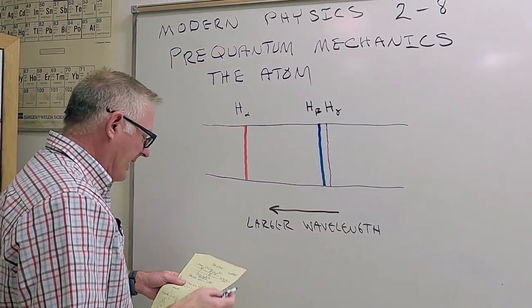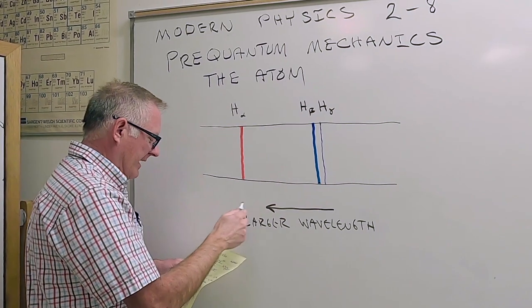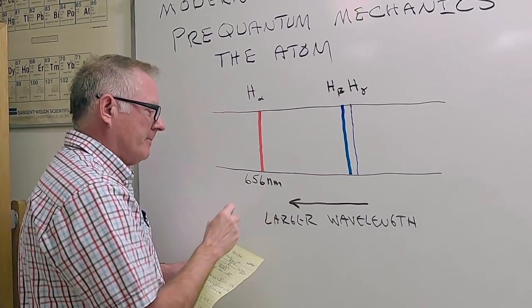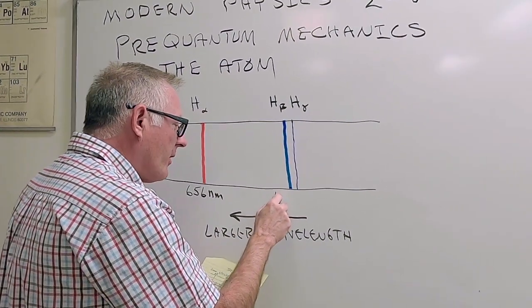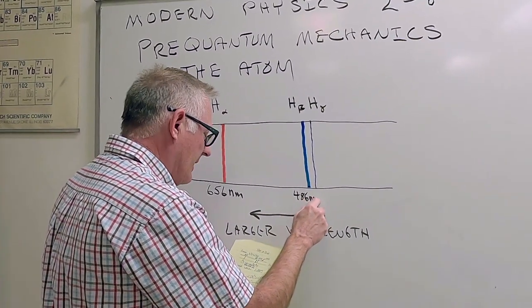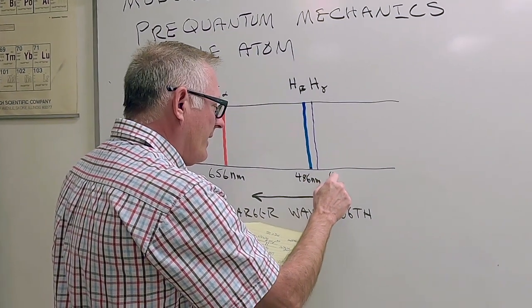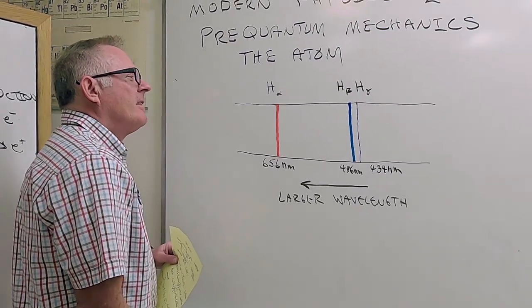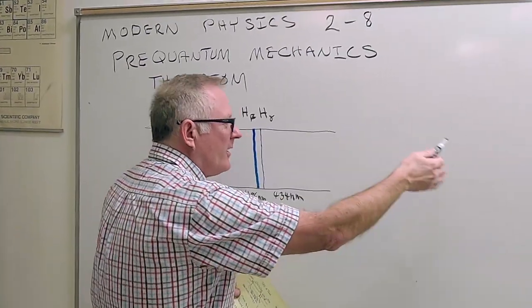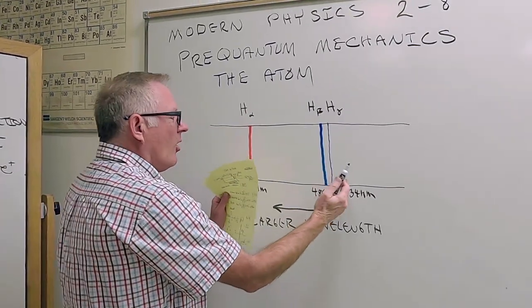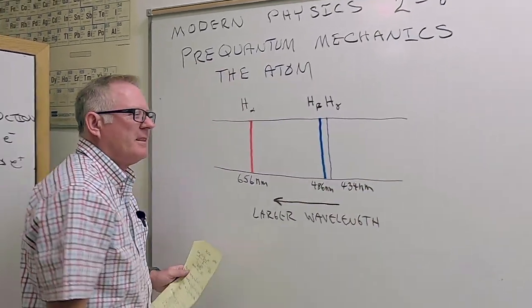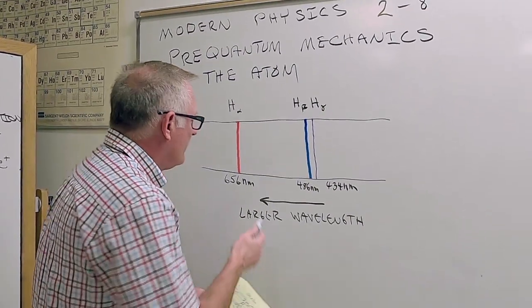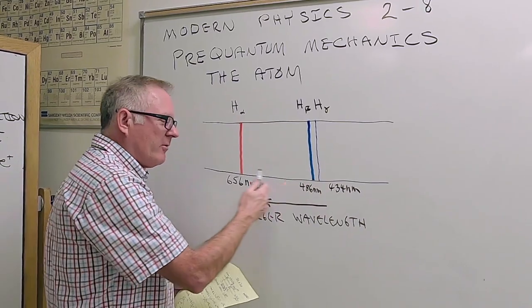Balmer measured the wavelengths of these lines: H-alpha was about 656 nanometers, H-beta was about 486 nanometers, and H-gamma (the violet) was about 434 nanometers. There are actually more — infinitely many — but our eyes only see within this range. Any further and we're up into the ultraviolet part of the spectrum.